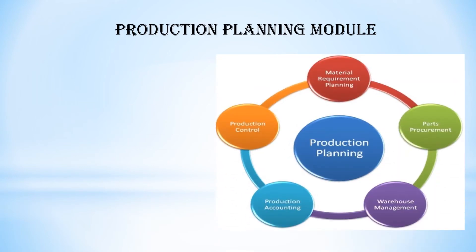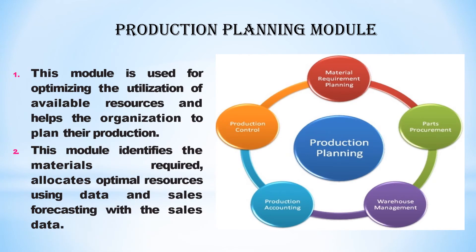Next we have the production planning module. What does it mean? There are material requirements, parts procurement, warehouse management — you can find all the data. Production accounting is also available here. This is a production planning module which is optimized to help the organization plan production, and it is required to allocate optimal resources using data and sales forecasting.